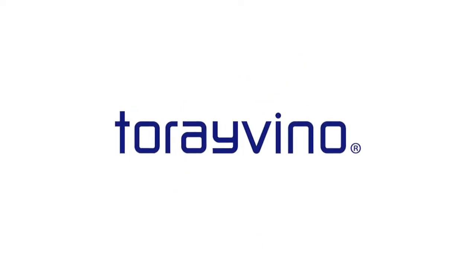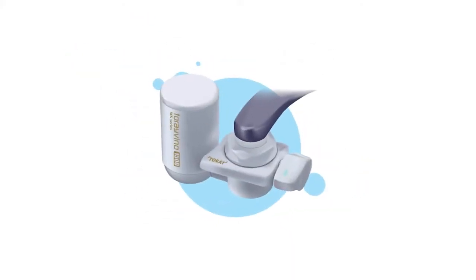But don't worry, there's a solution. Introducing Tori Vino, the number one compact faucet-mounted water purifier from Japan. A revolutionary product that will change the way you look at water from the tap.